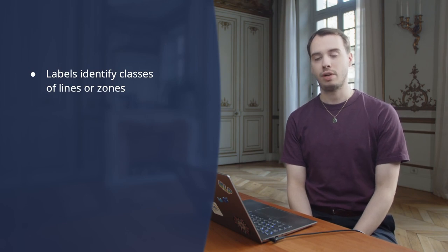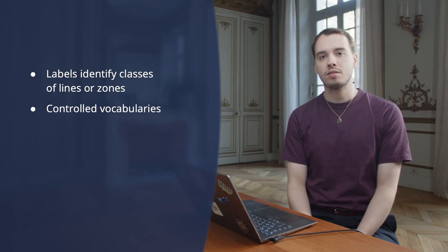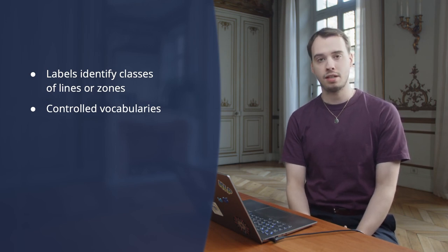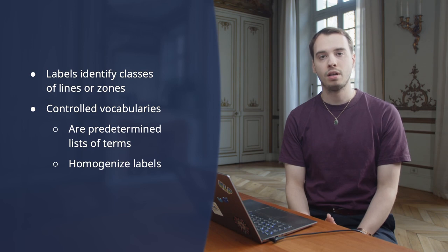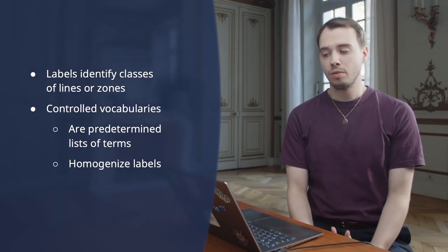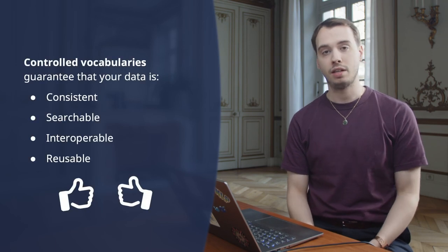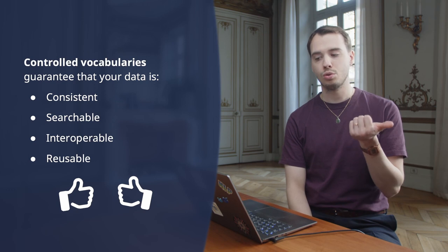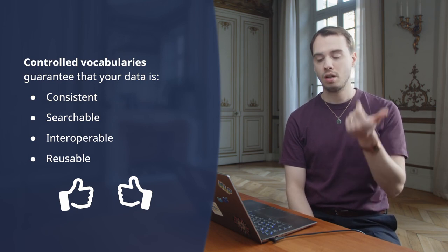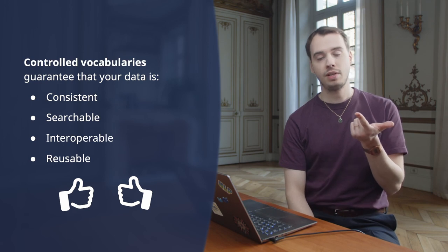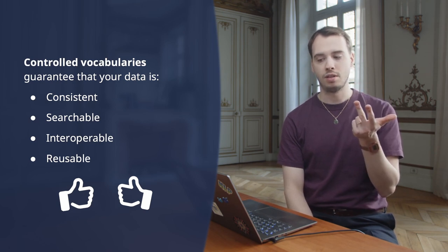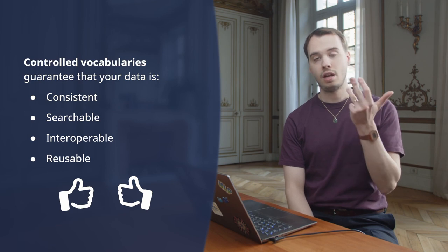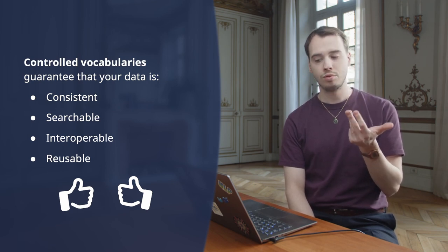In most software, segmented zones and lines can be given a label to identify their class. Controlled vocabularies exist to homogenize the terms used to identify these classes. They provide a predetermined list of standardized terms or phrases used to describe and categorize data. Controlled vocabularies ensure that data is consistent, searchable, and interoperable — as the annotation is standardized, data sharing is facilitated — and reusable, as an ontology enables you to mutualize annotated data.